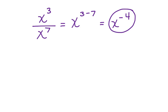Now, you'd like to think this is your final answer, but we can't leave a negative exponent like this. So we can say that x to the negative power is the same as 1 over x.